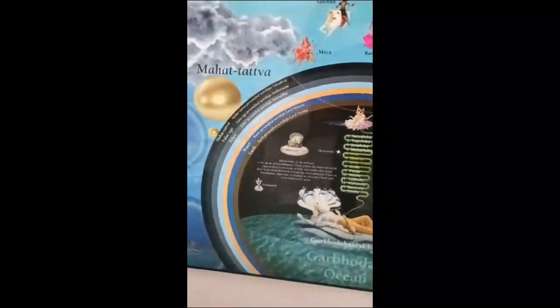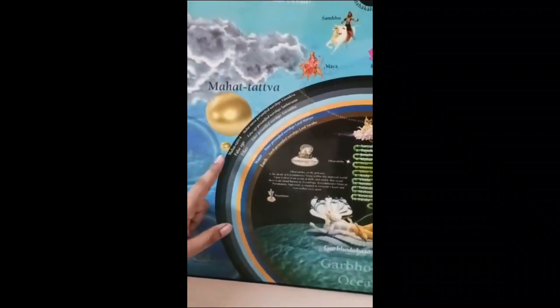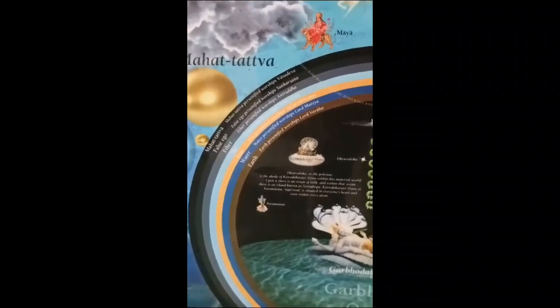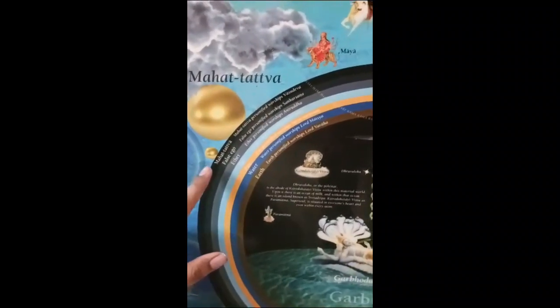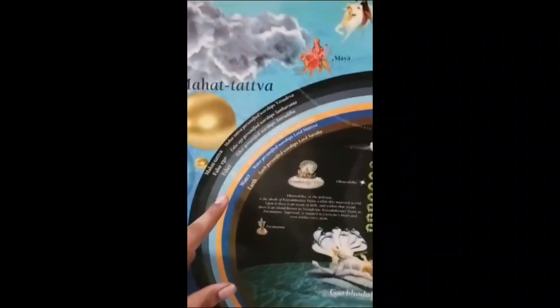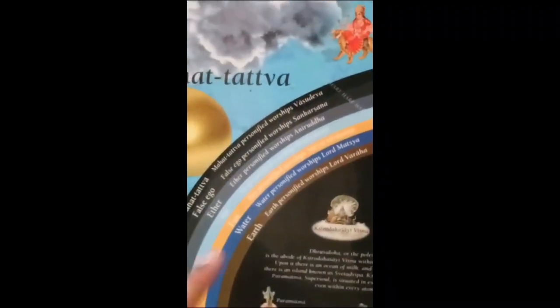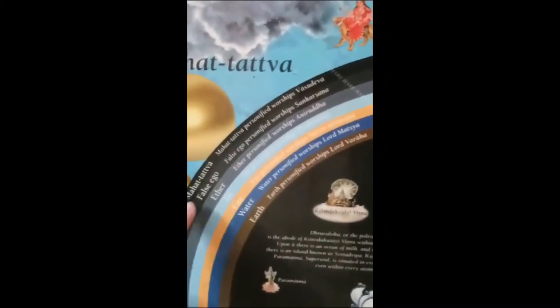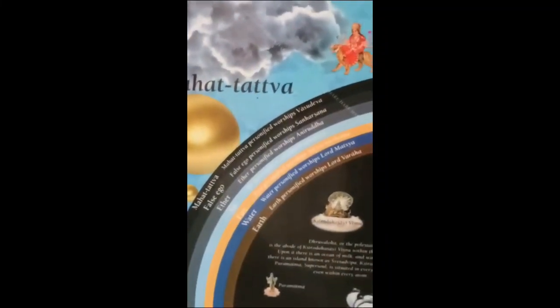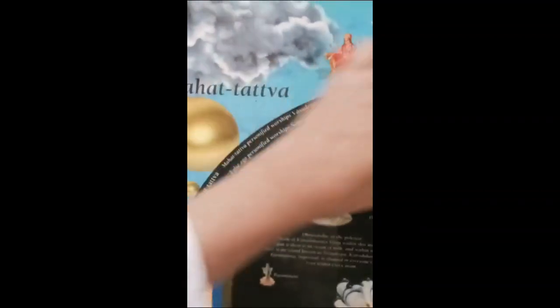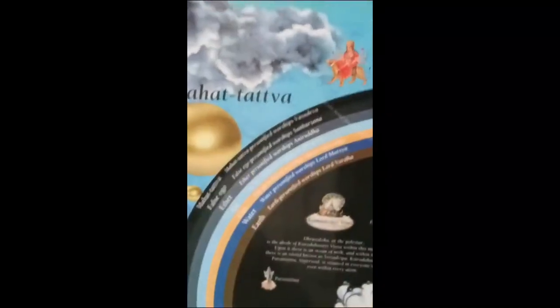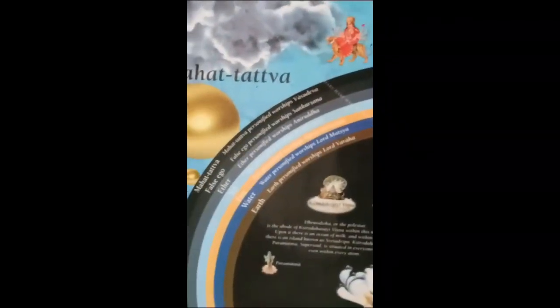You can zoom in and see the description of one universe here. There are seven layers in the covering of each universe: earth, water, fire, air, ether, false ego, and Mahat Tattva. These are the seven-layer coverings of each universe.